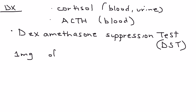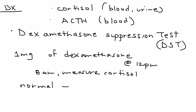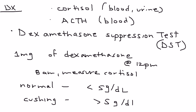The dexamethasone suppression test works as follows: you give the patient a small dose of dexamethasone — a steroid — at midnight, and then the next morning at 8 a.m. you measure the cortisol level in the blood. In a normal patient with no Cushing's, the morning cortisol will be low, less than five, because the steroid suppresses it via negative feedback. But in a patient with Cushing's, the cortisol is not suppressed and will still be greater than five.